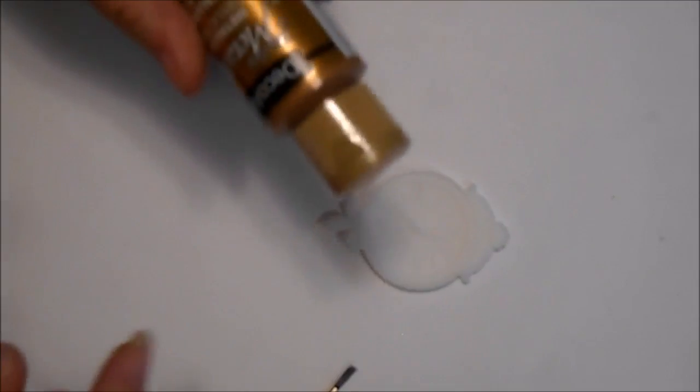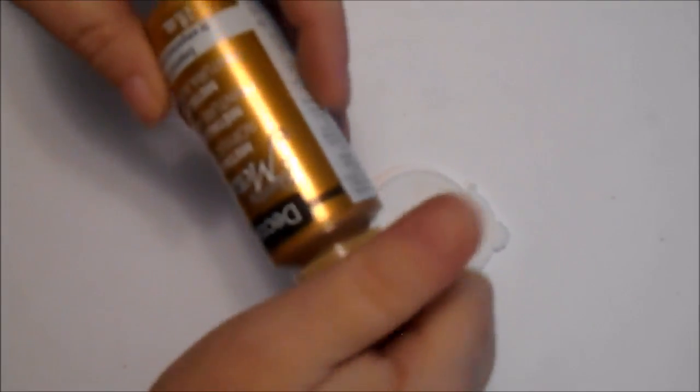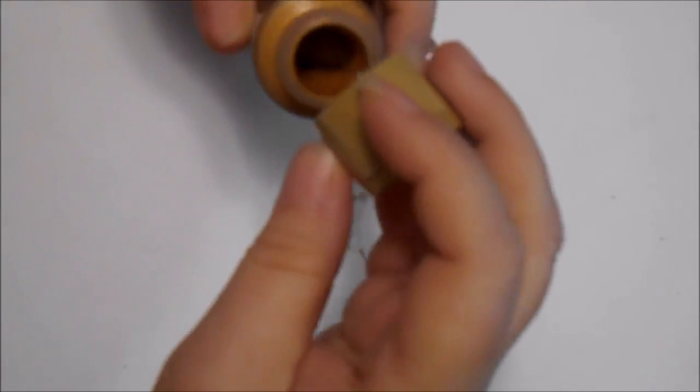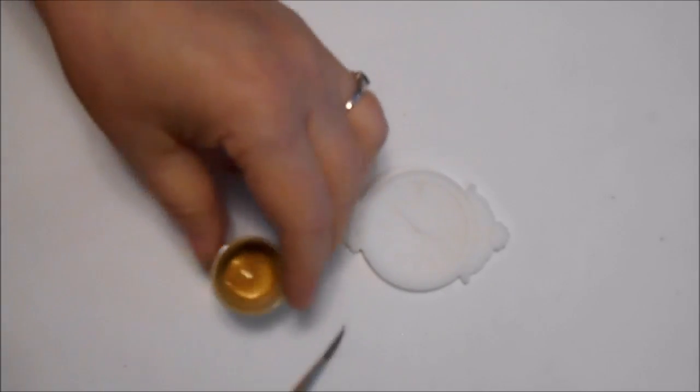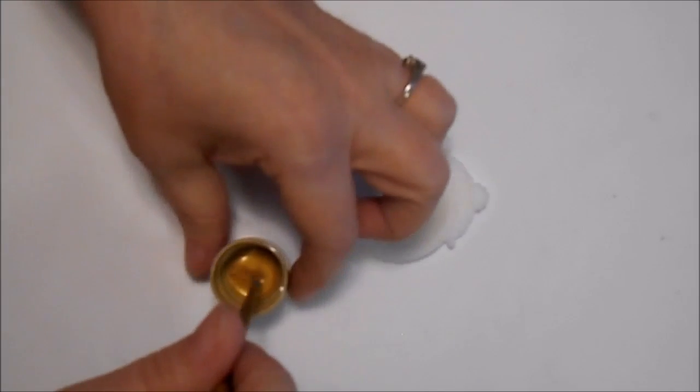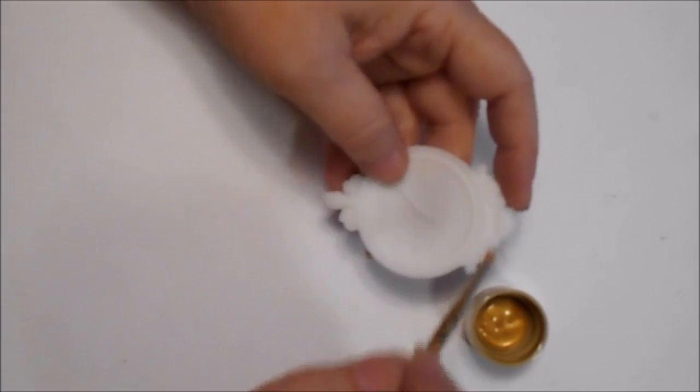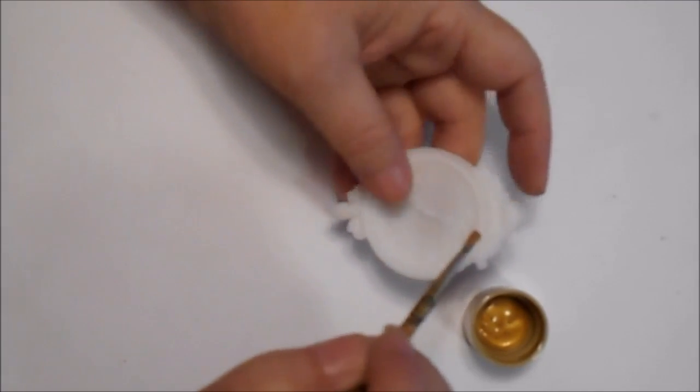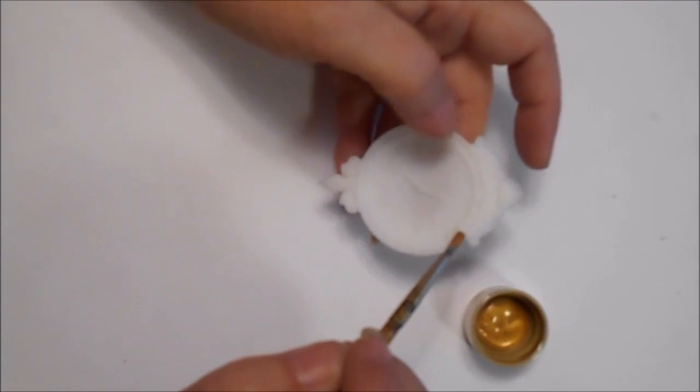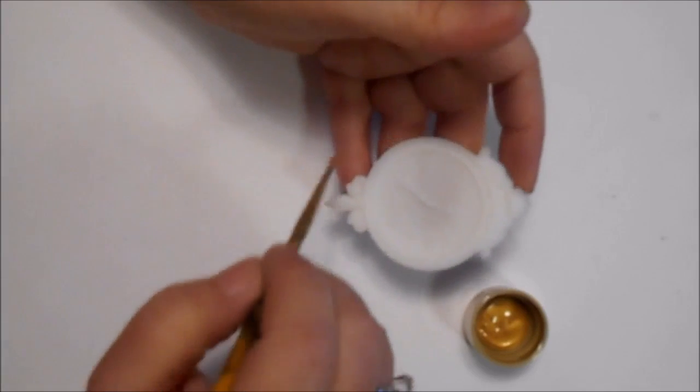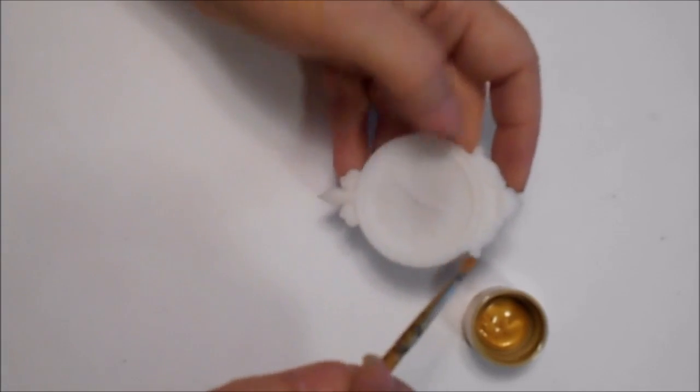All right, when using metallic acrylic paints you should always shake the bottle to mix up the particles that are in there. All right, I'm just going to give it a first coat of the gold. Then I'll do the white.